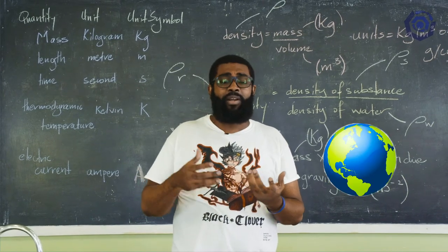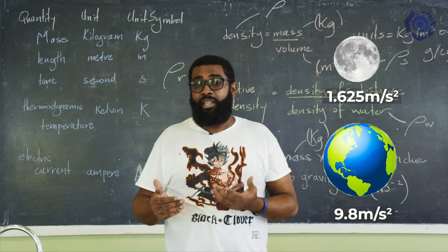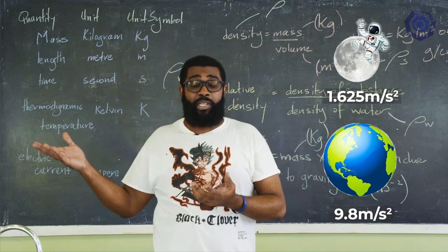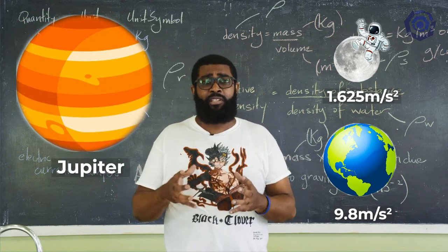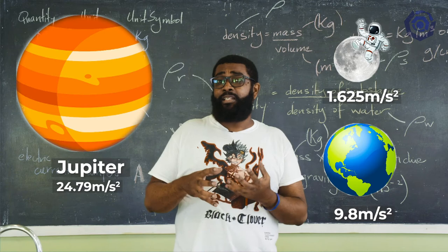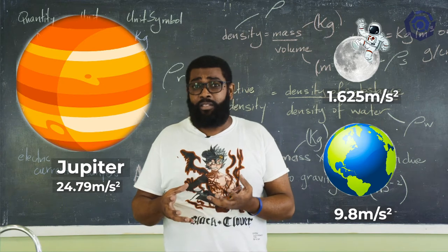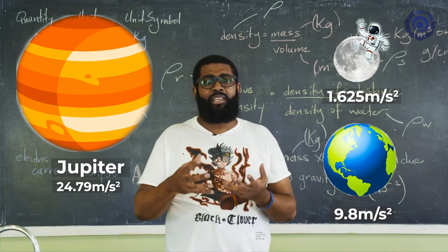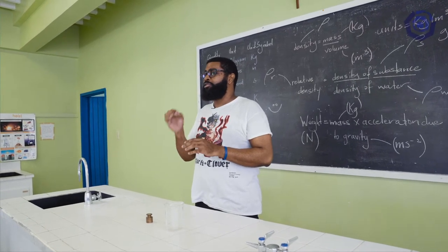Here on Earth, our acceleration due to gravity is around 9.8 metres per second squared. On the Moon, it is significantly less — that is why footage of men walking on the Moon shows them appearing light and floaty. On a larger planetary body, the acceleration due to gravity would be much greater, causing objects — even you and I — to have a much greater weight. In some cases, the gravity could be so great that the weight produced would make even walking impossible. So be grateful you are on planet Earth, because our acceleration due to gravity is just right.